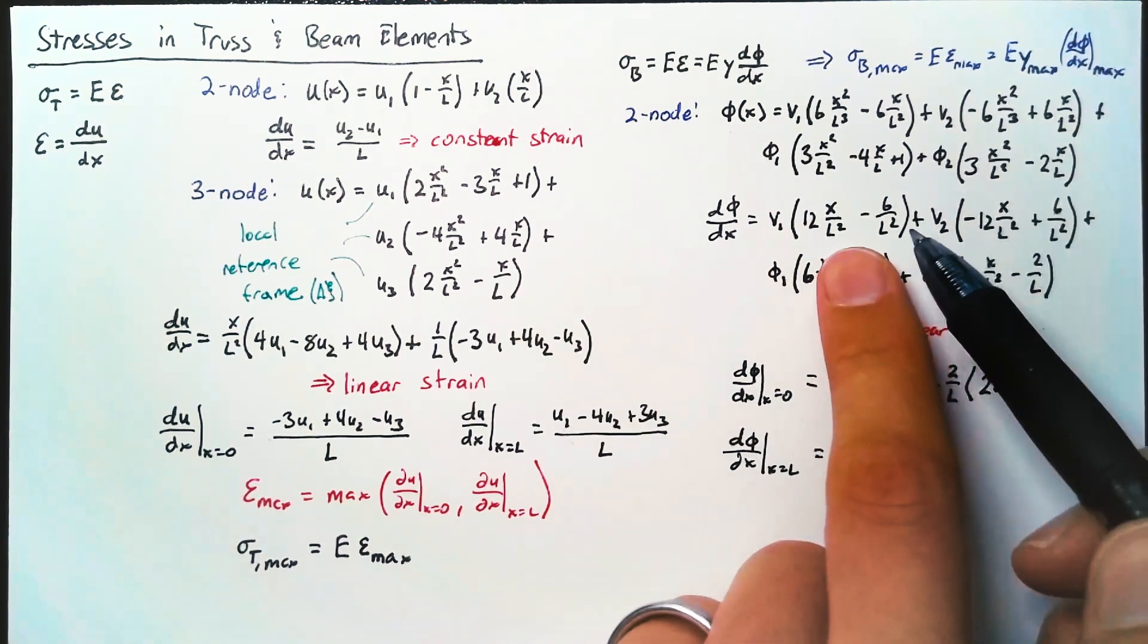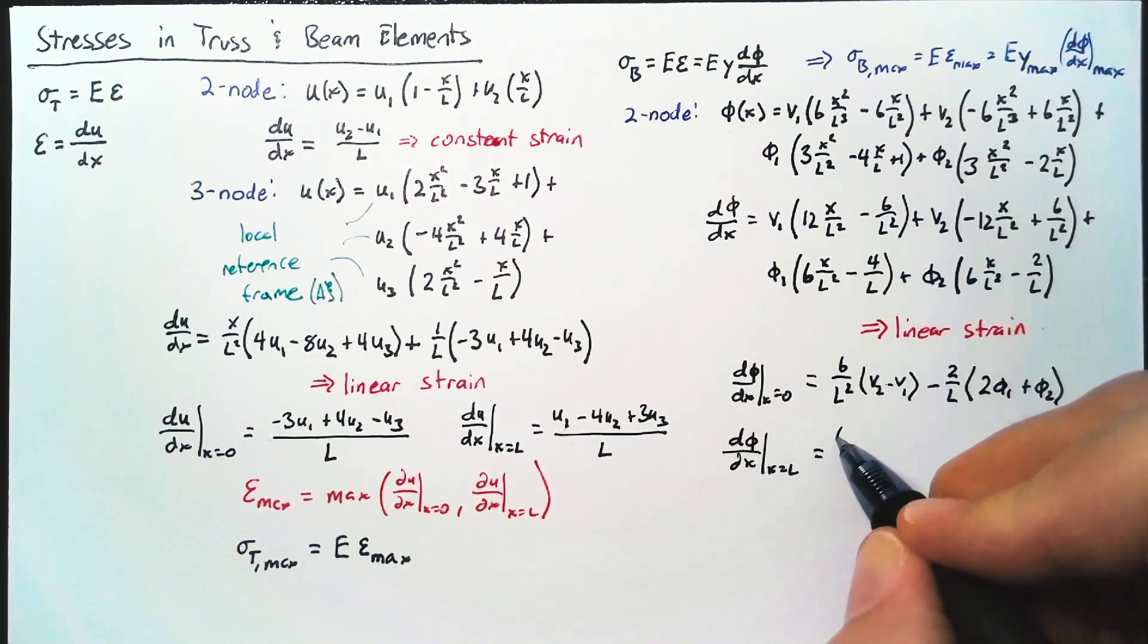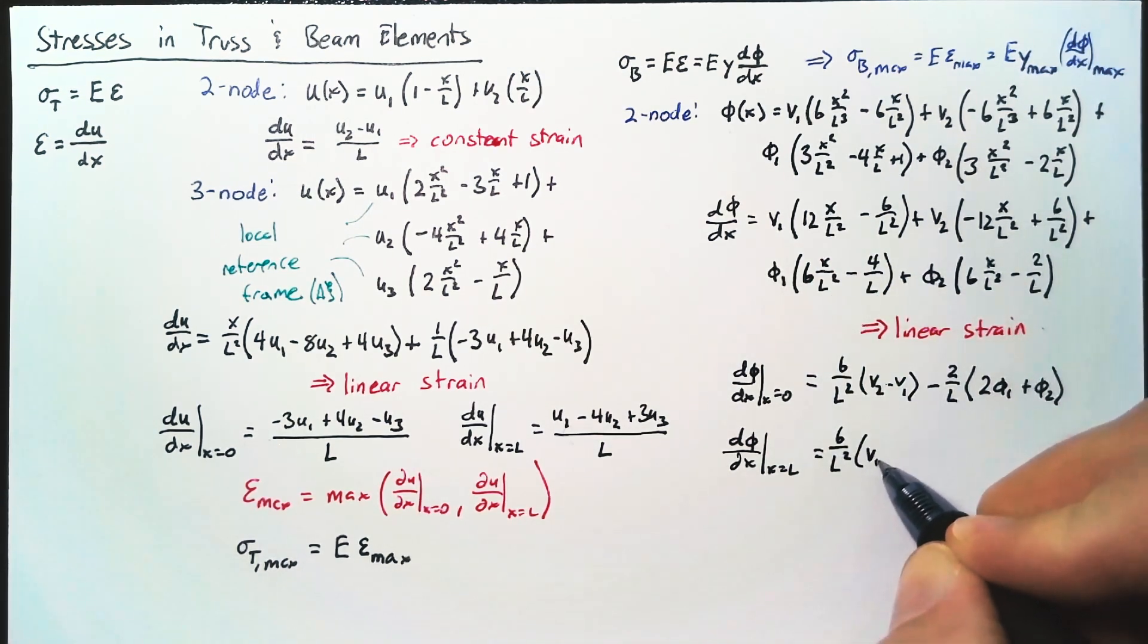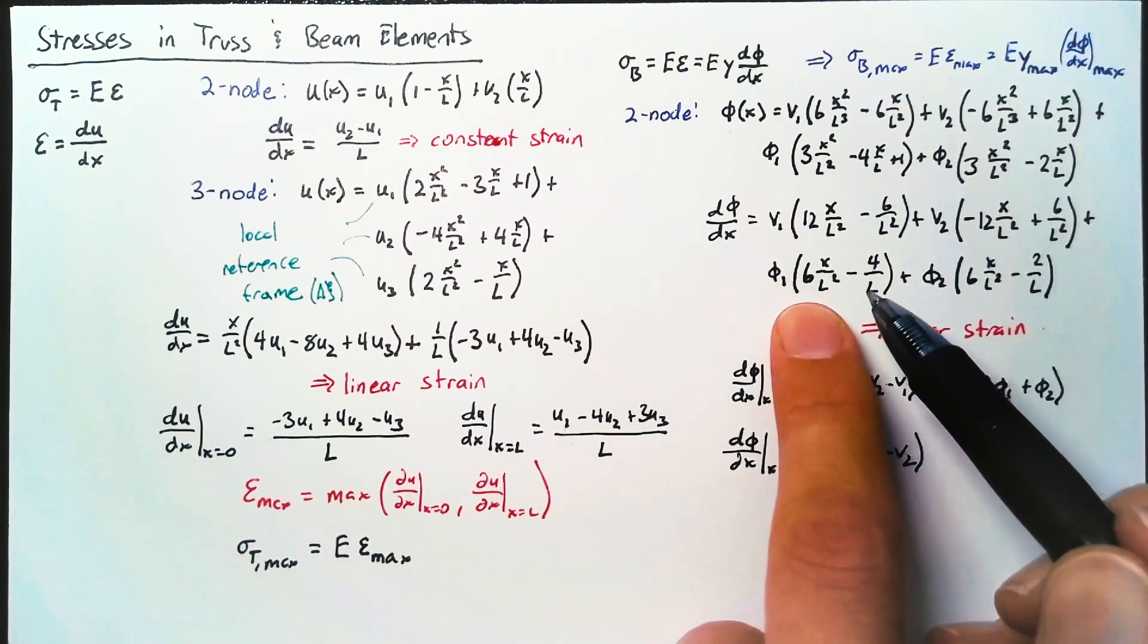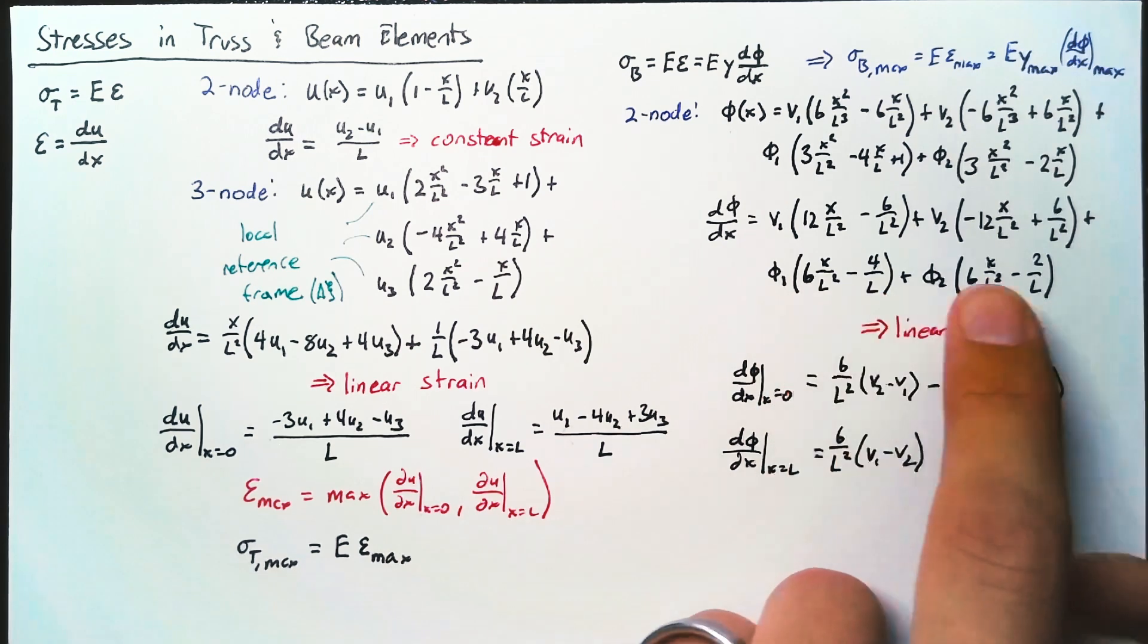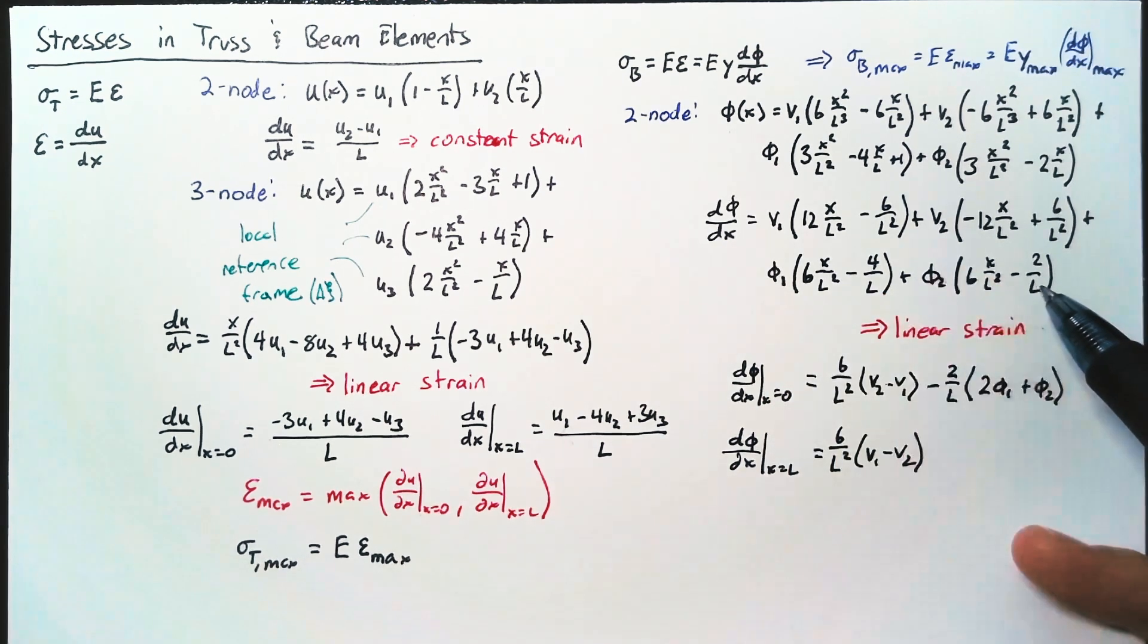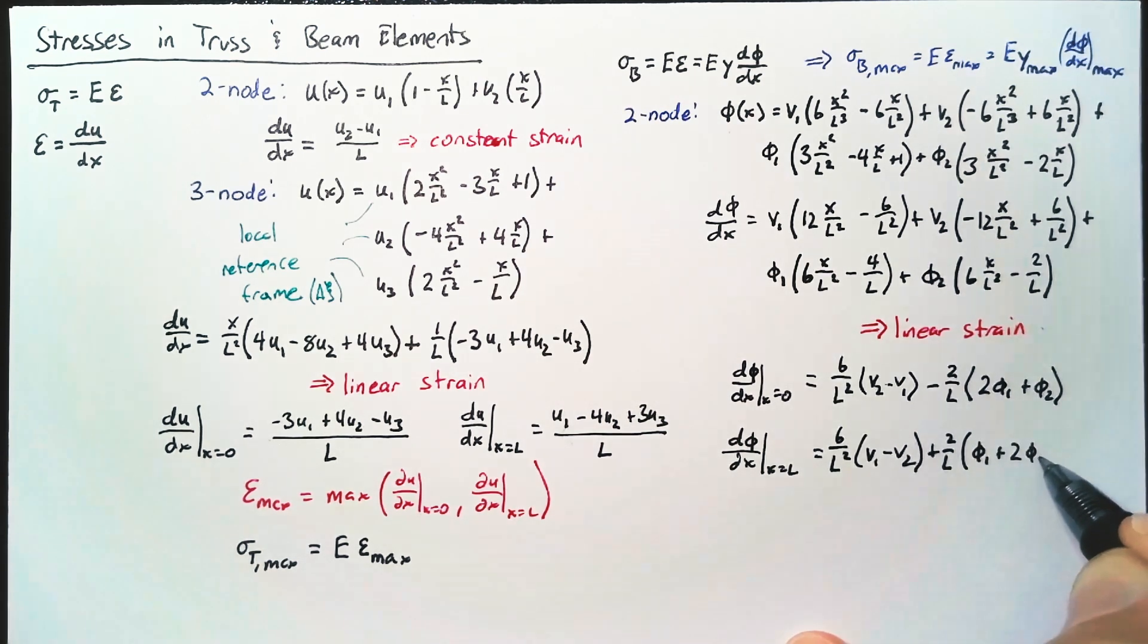And then at x equals L, a sign just changes for V1 and V2. And so this just becomes a 6 over L squared, V1 minus V2. And then here we end up with a positive 2 over L for the phi1 term, and a positive 4 over L for the phi2 term. So this becomes a plus 2 over L, and here we get phi1 plus 2 phi2.